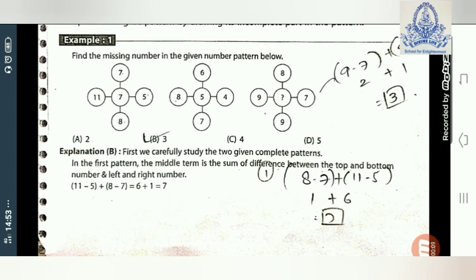Example 1: Find the missing number in the given number pattern. You see five numbers arranged up, down, left, right, and middle — left is eleven, right is five, up is seven, down is eight, and middle is seven. We use the subtraction method: eight minus seven equals one, and eleven minus five equals six. So six plus one equals seven — our answer in the middle is seven.